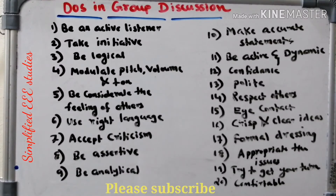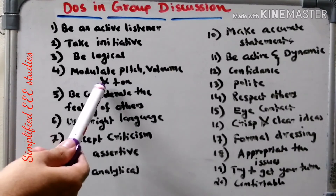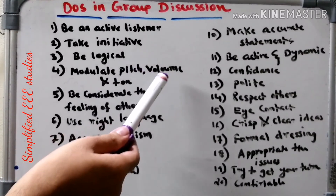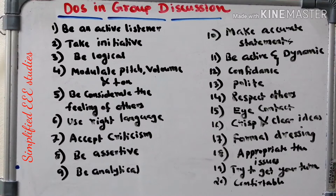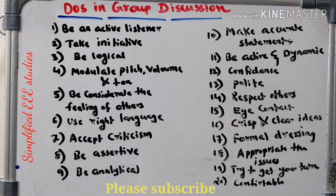While speaking, it should be logical — you have to provide logical statements. Then you have to modulate your pitch, volume, and tone while speaking. Whichever word you need to stress, provide suitable stress; wherever you should reduce your voice, speak in that manner. That means modulate the pitch, volume, and tone.